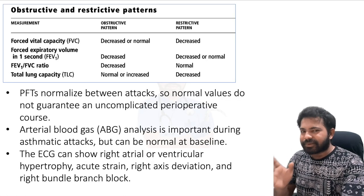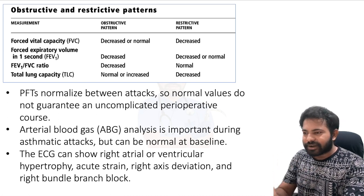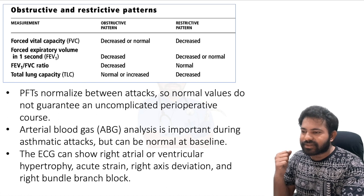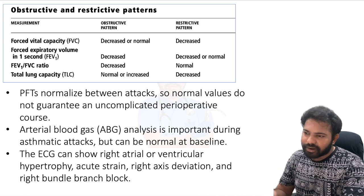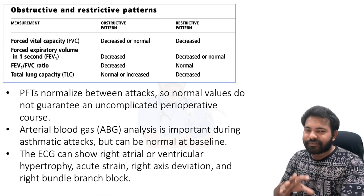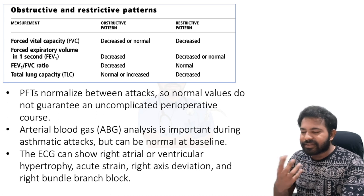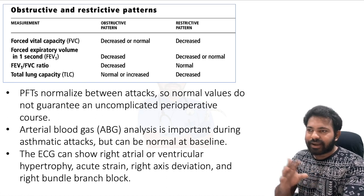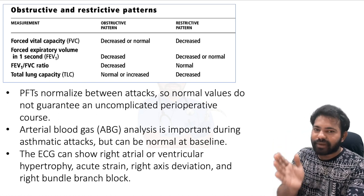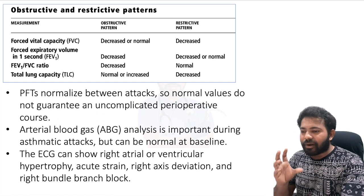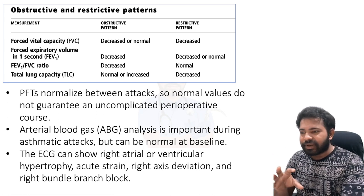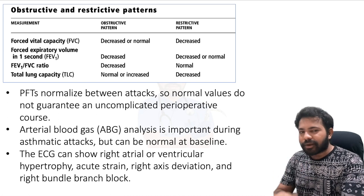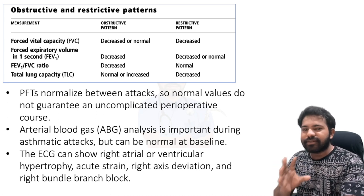Asthma is an obstructive pattern disease, so FVC is decreased or normal and the FEV1/FVC ratio is decreased. Total lung capacity can be normal or increased in obstructive disease. In restrictive disease, total lung capacity is decreased due to fibrosis or restricted chest wall movement. Importantly, pulmonary function tests may normalize between asthma attacks, so a normal PFT does not guarantee an uncomplicated perioperative course.